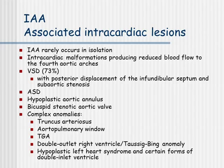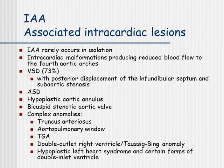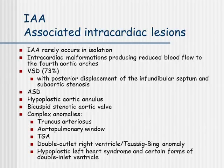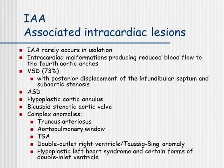IAA rarely occurs in isolation. There may be several intracardiac malformations producing reduced blood flow to the fourth aortic arch. The most common associated lesion is VSD, appearing in almost all cases except those with an aortopulmonary window. With the VSD, there's often a posterior displacement of the infundibular septum and subaortic stenosis. Other associated lesions include ASDs, hypoplastic aortic annulus, bicuspid or stenotic aortic valves, and complex anomalies such as truncus arteriosus and aortopulmonary window, which are not uncommon in these patients.